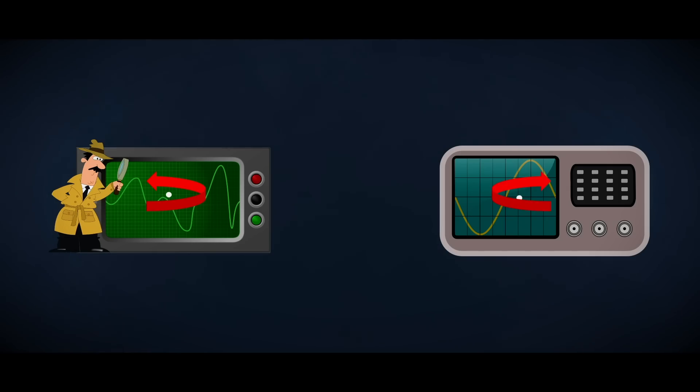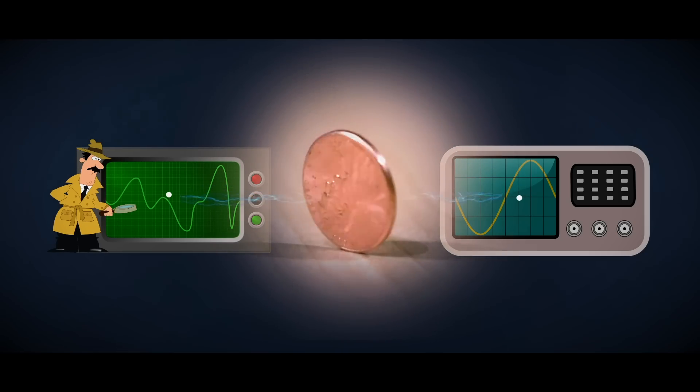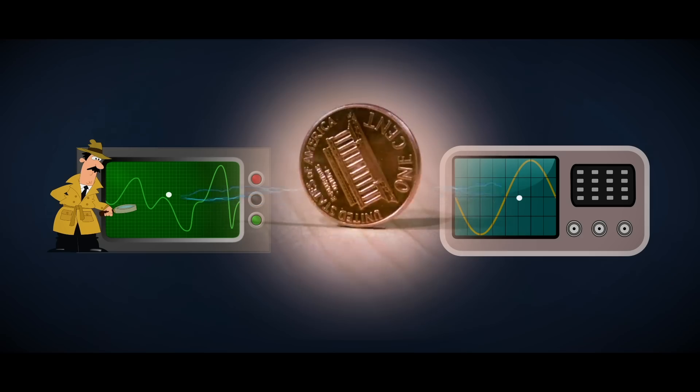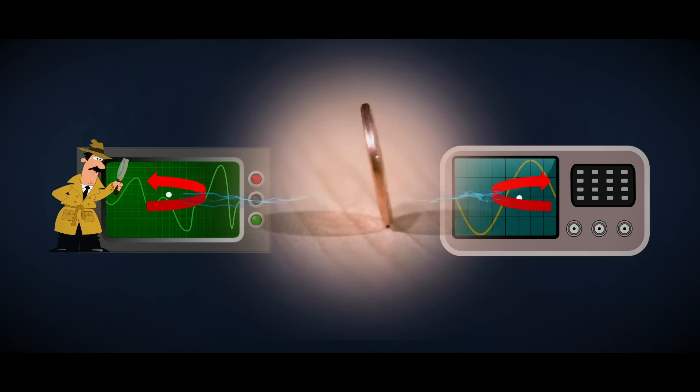The two halves behave less like discrete physical entities and more like the sides of a coin. When one half contracts to a definite state by the act of observation, the other must do the same. This holds true no matter how far apart the two halves are.